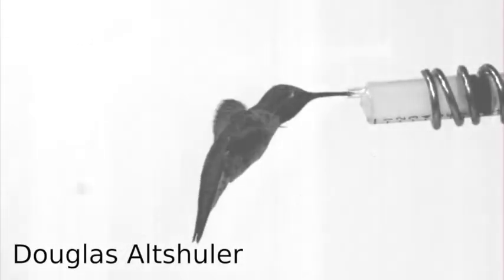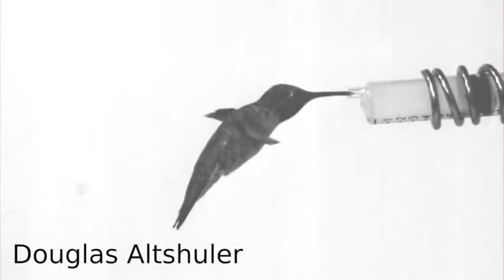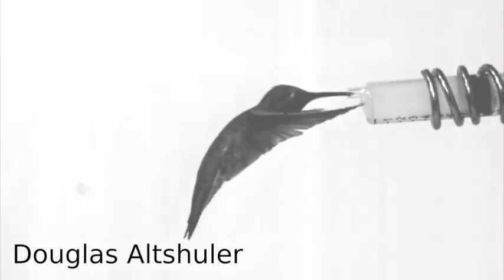Compared to hummingbirds, vertebrates that are capable of similar aerial agility, flies use a surprisingly small set of brain cells called neurons to control the motion of their wings.